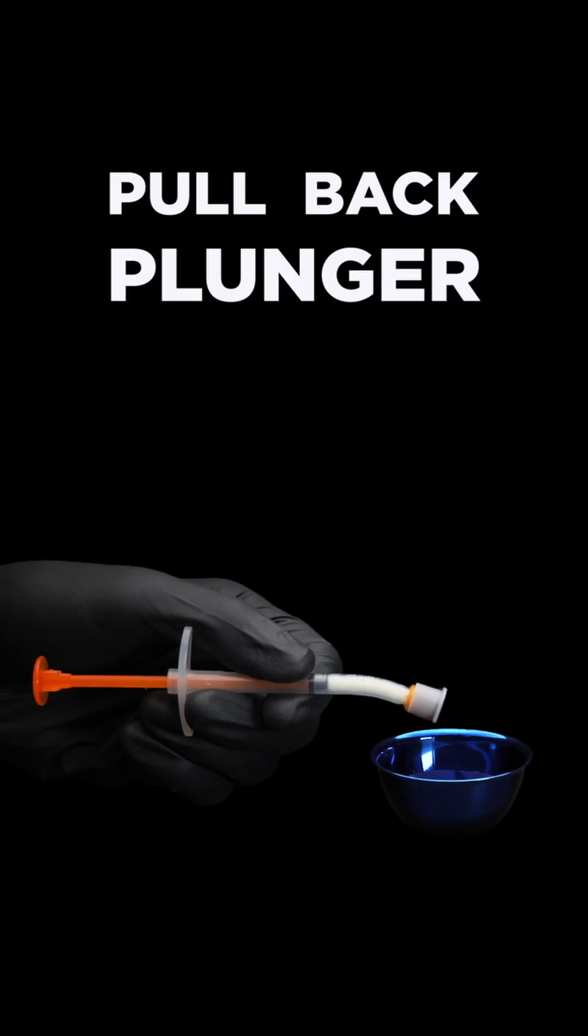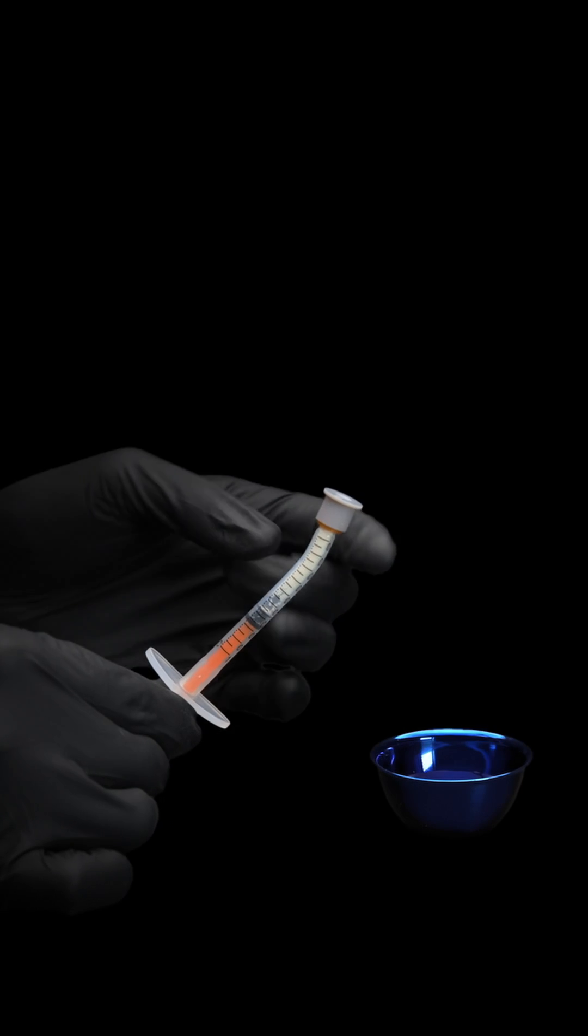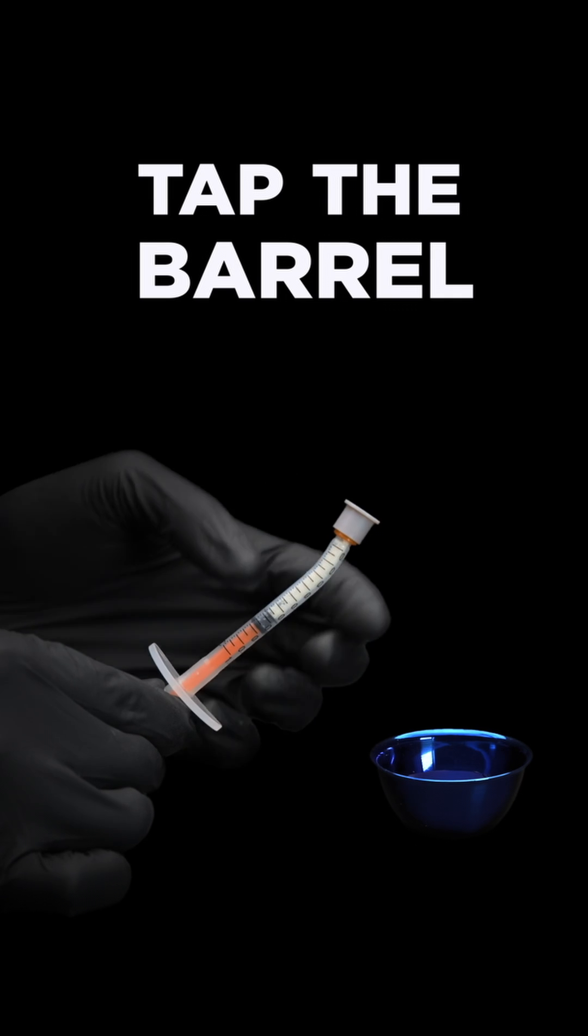Start by pulling back the plunger about halfway, giving extra space behind the particulate. Holding the syringe plunger side down, tap the barrel multiple times.